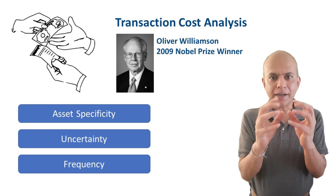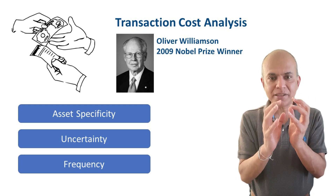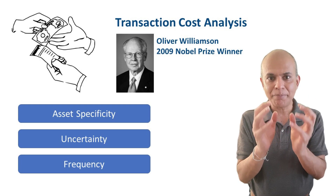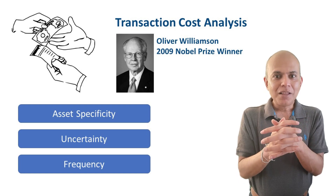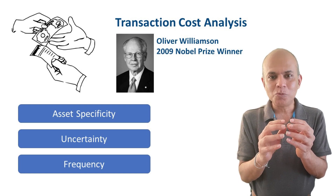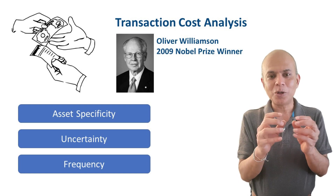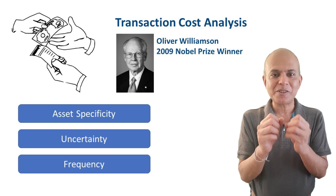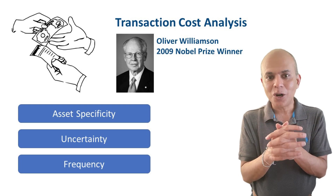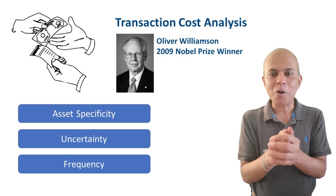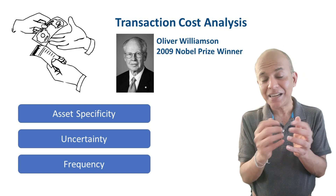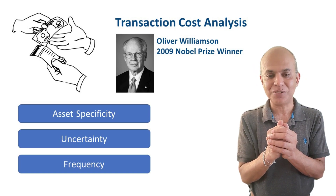This theory has a basic assumption that supply chain partners or external partners are opportunistic. Unless they are bound by some external force, some process, some method, or some contract, these external partners are going to be opportunistic and try to extract the maximum rent — or the maximum opportunity — they can create from a given transaction.